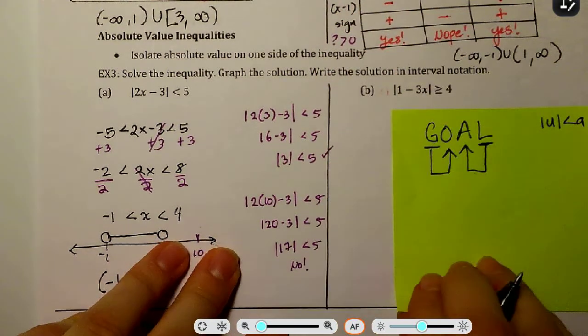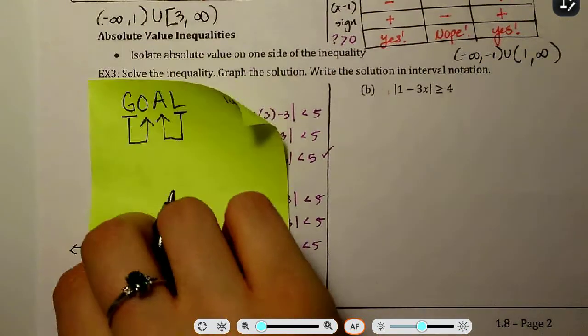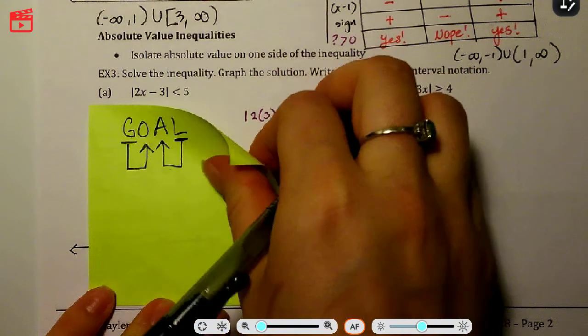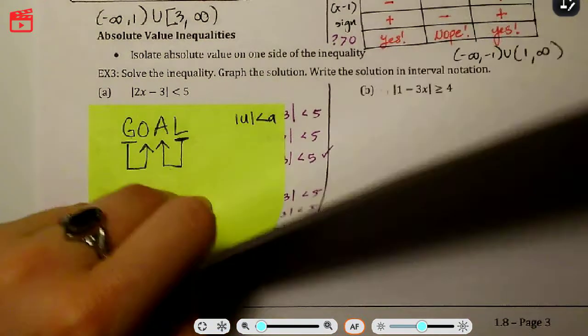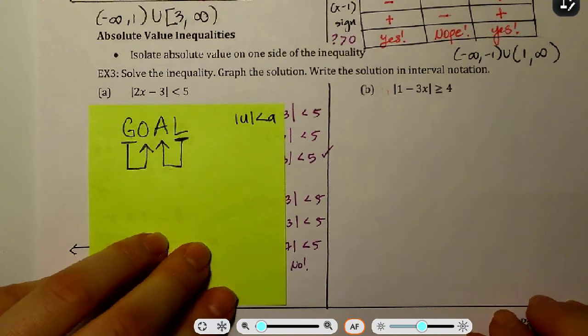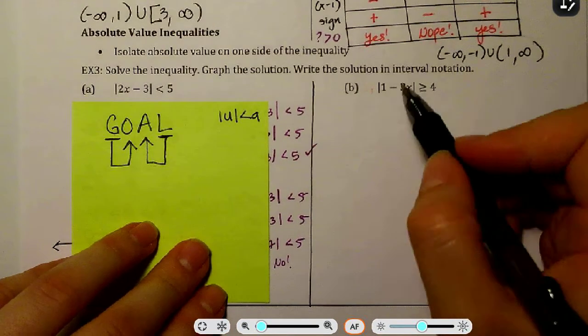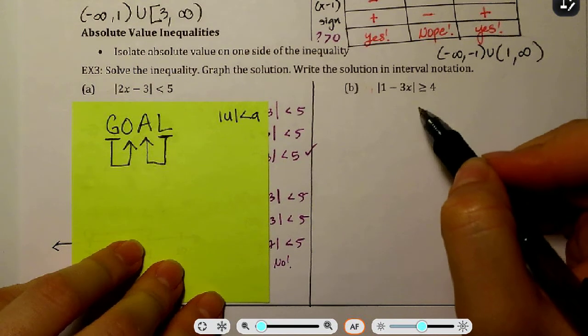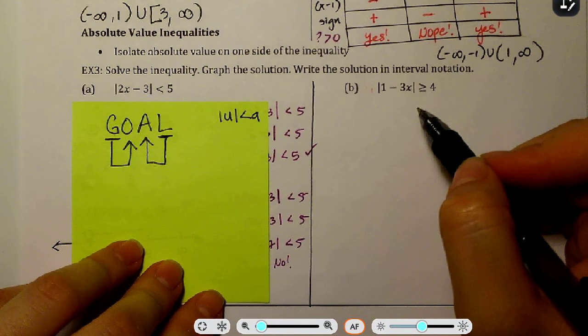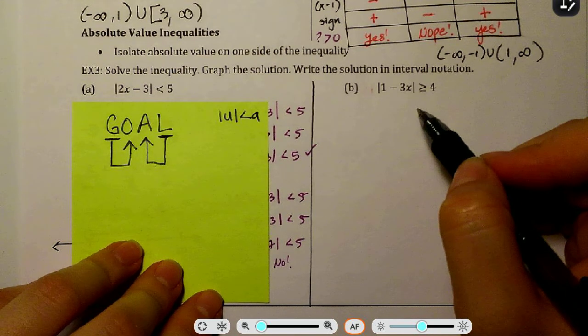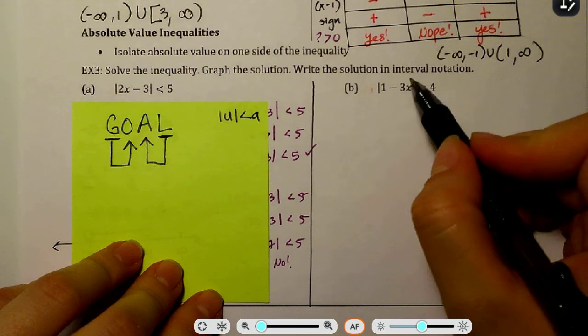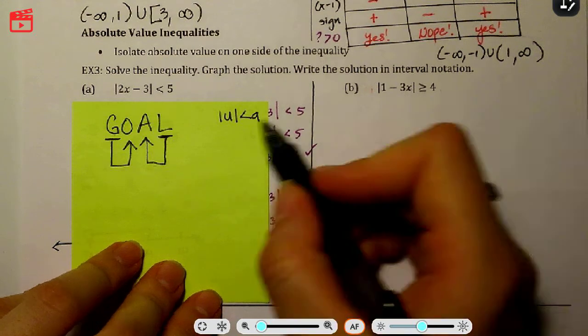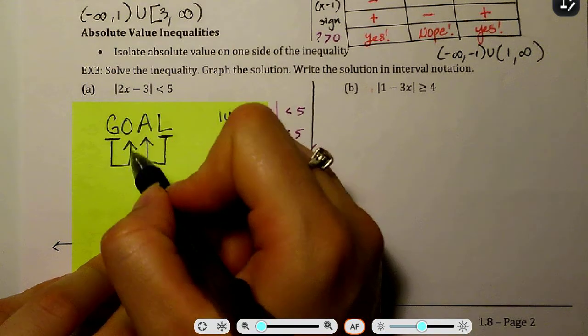One last problem. And then, yeah, that's your homework. Okay. Same thing. Let's check. Is there absolute value by itself? Yes, it is. So let's go ahead and split this. The question is, is it an OR or an AND? Well, my absolute value is greater than 4, so greater than means it's going to be an OR statement.